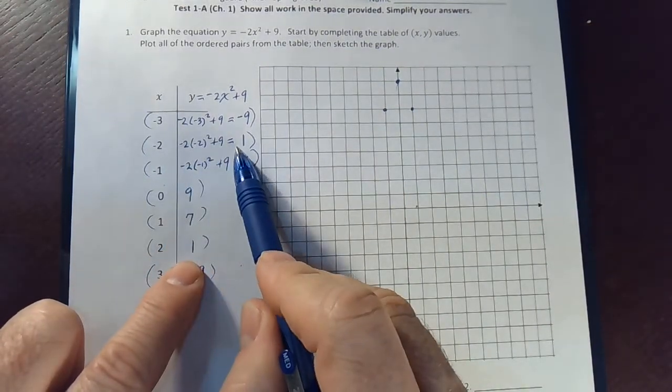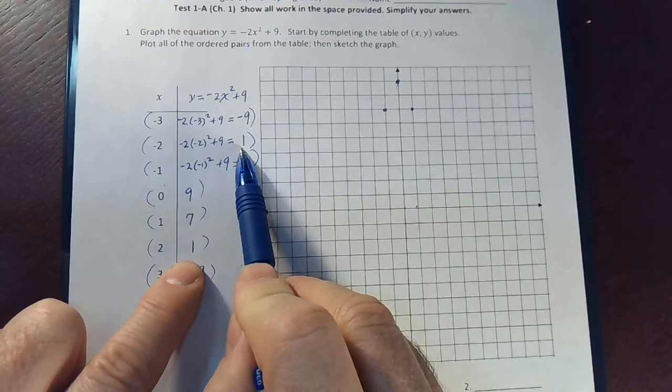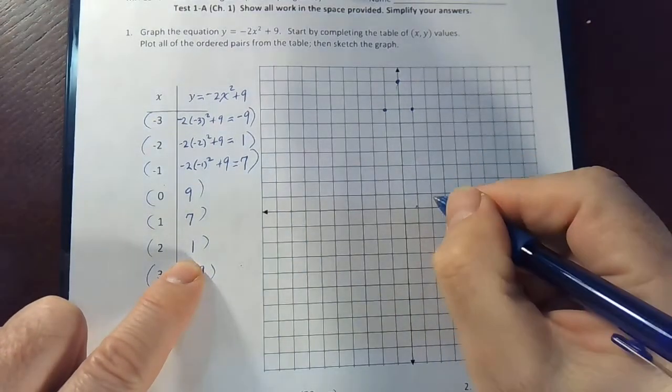2 and negative 2 both have a height or a y value of 1. So 2 comma 1 and negative 2 comma 1.